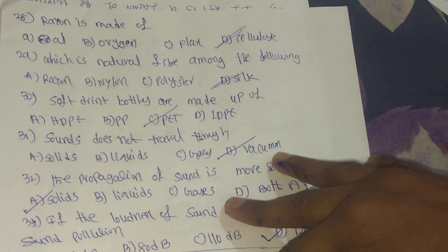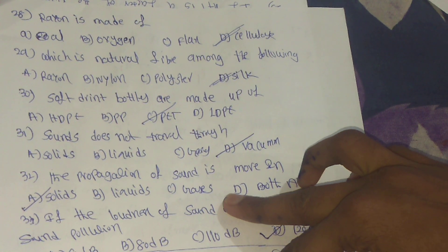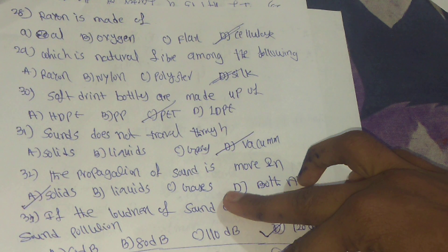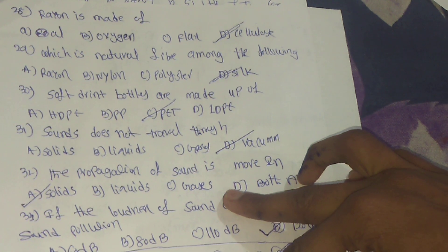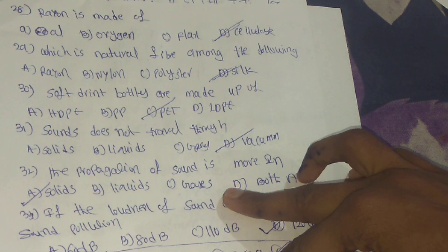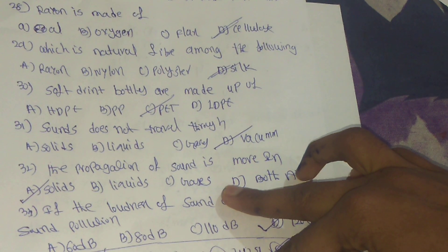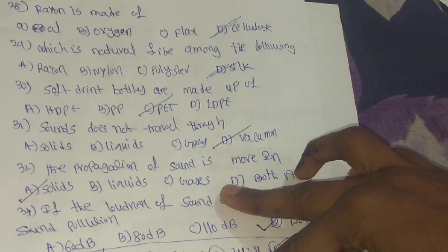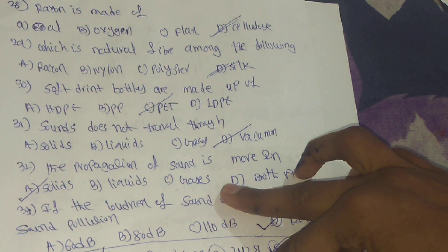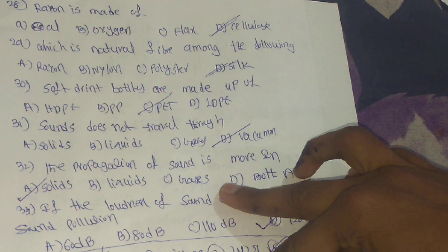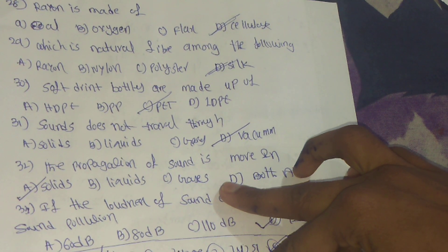28th question: rayon is made of? Answer: option D, cellulose. 29th question: which is a natural fiber among the following? Answer: option D, silk. 30th question: soft drink bottles are made of? Answer: option C, PET.